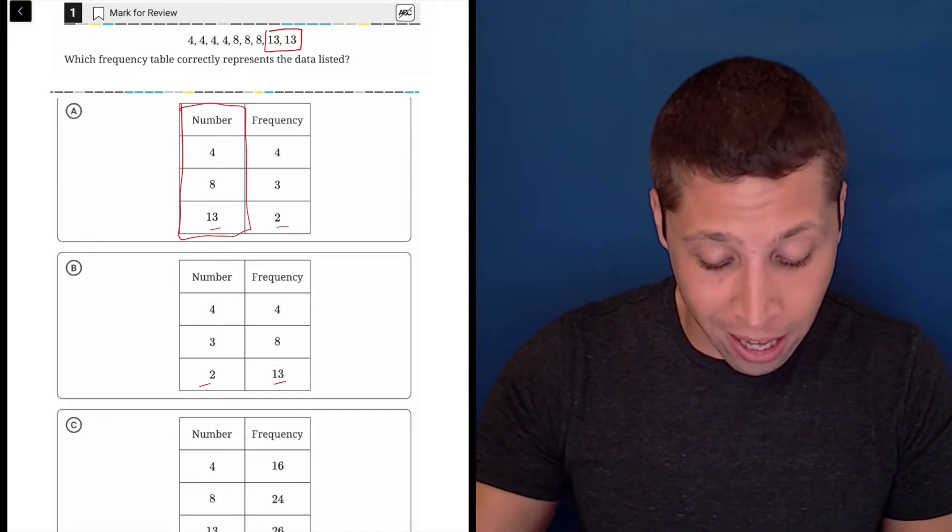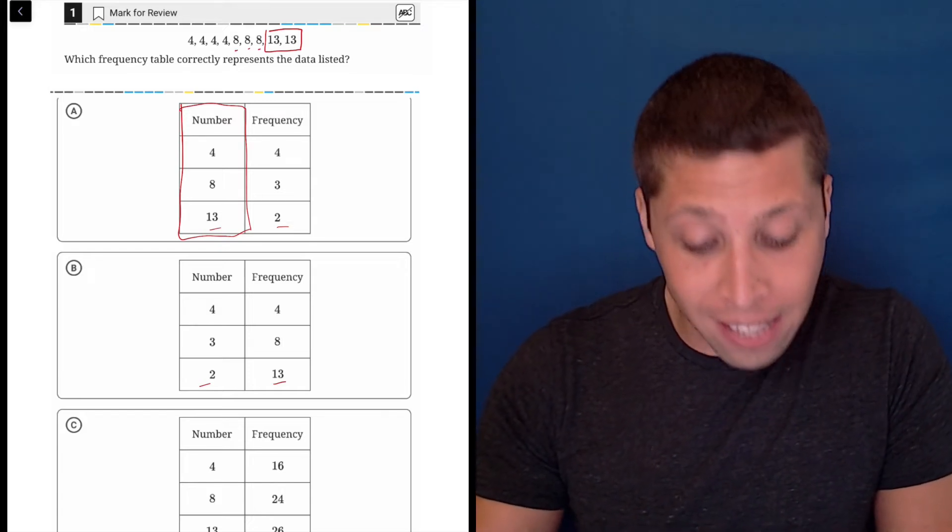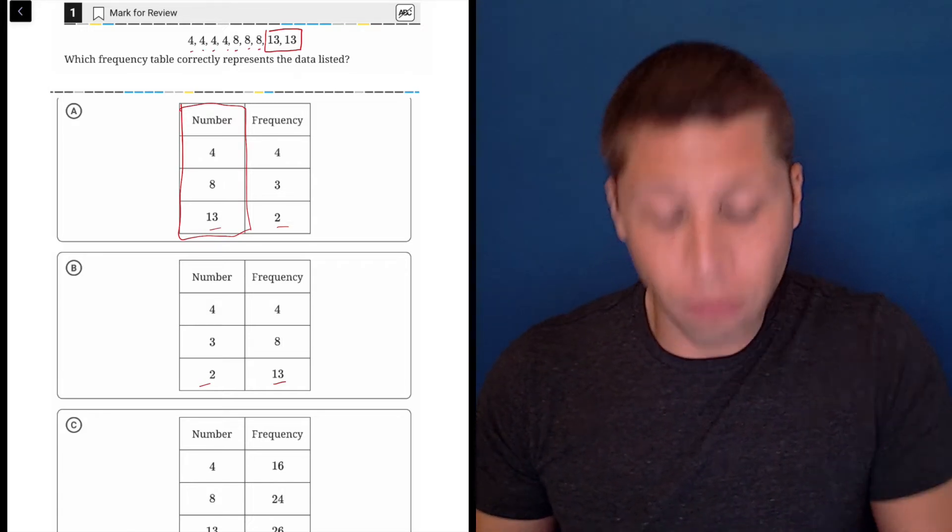So we can check the whole thing. There are two 13s, one, two, three eights, and one, two, three, four fours.